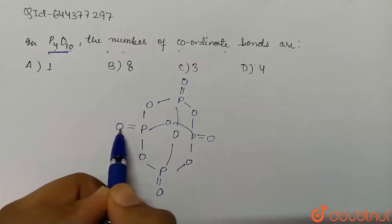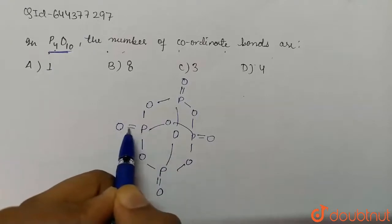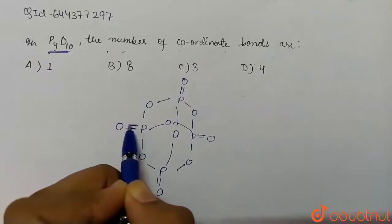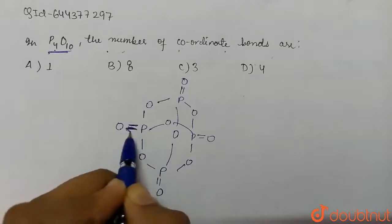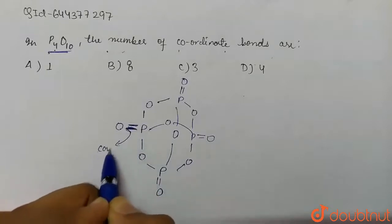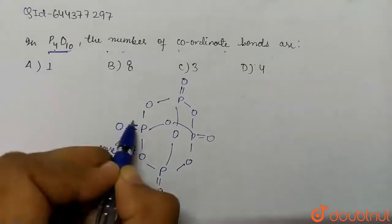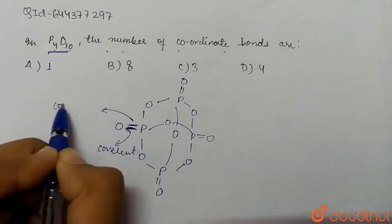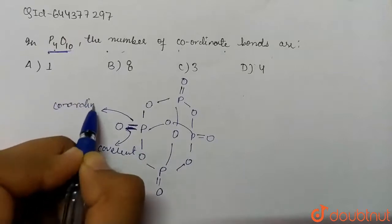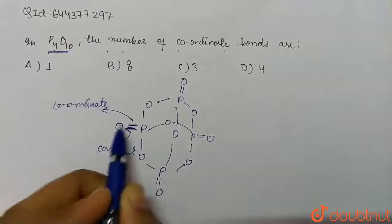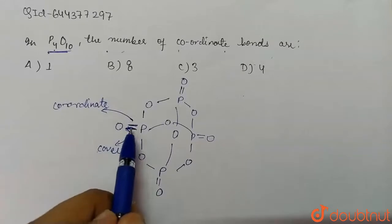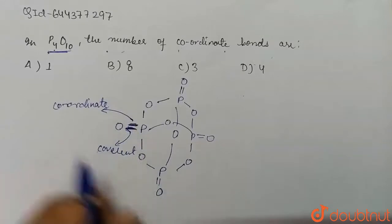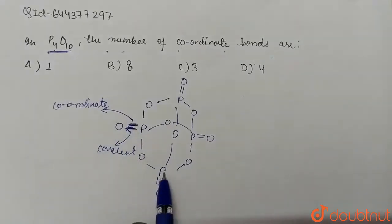Now here if we see, we have this double bond O, and in this P double bond O, one bond is normal covalent bond and the another bond is coordinate bond. So this bond here is covalent and this bond here is coordinate.